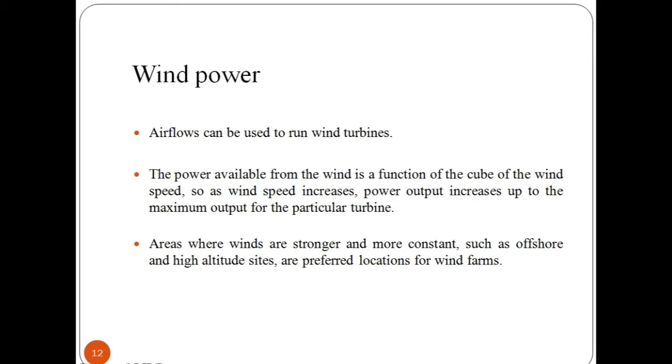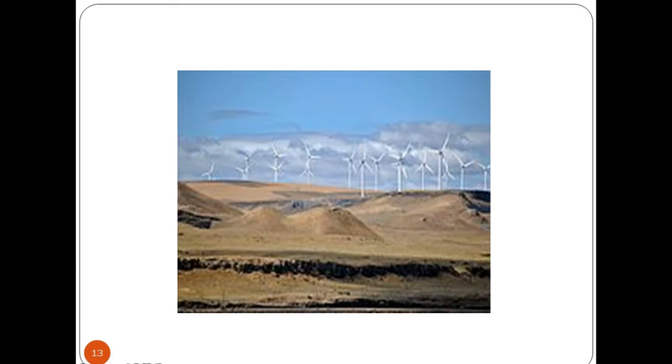Wind energy is the energy extracted from the wind using wind turbines to produce electrical power, windmills for mechanical power, wind pumps for water pumping, or sails to propel ships. The effect of wind energy on the environment is generally less problematic than those from other power sources. Large wind farms consist of hundreds of individual wind turbines which are connected to the electrical power transmission network.